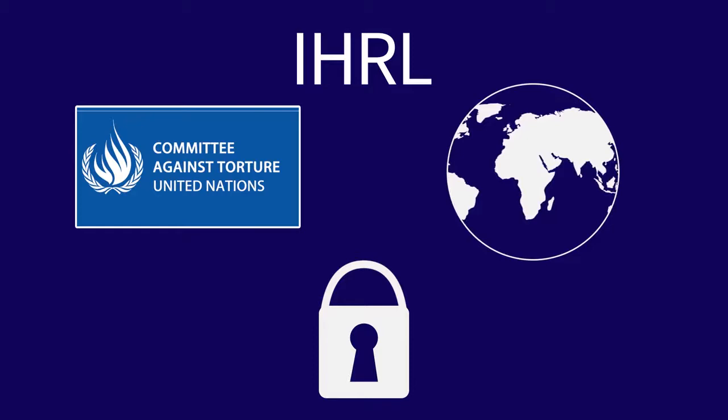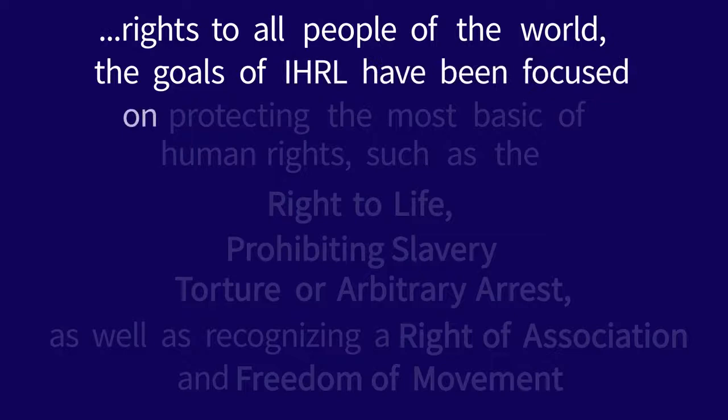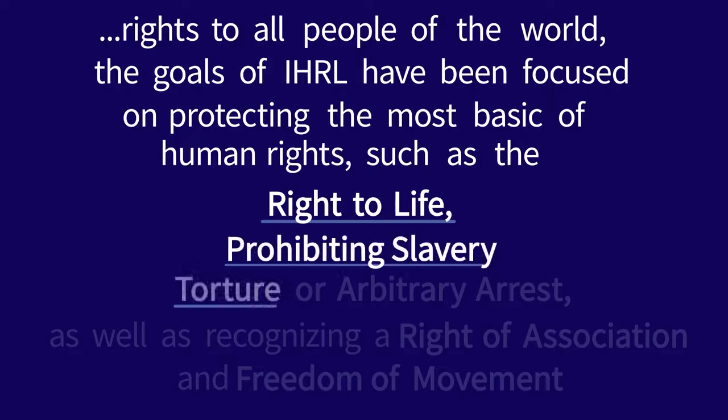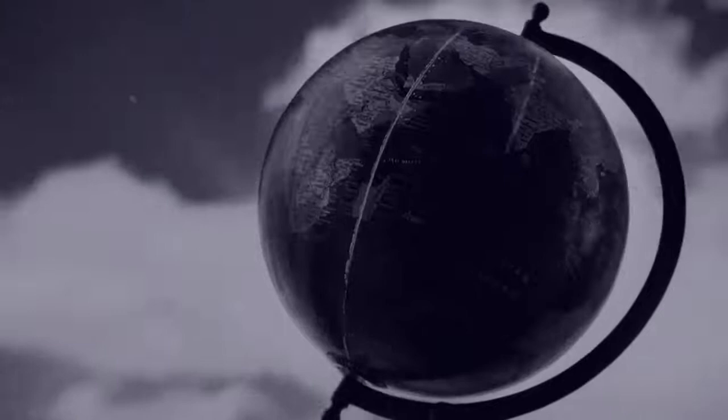Despite these efforts, so far there is no single binding international agreement on human rights that applies worldwide. Because international human rights law seeks to broaden recognition of certain rights to all people of the world, the goals of IHRL have been focused on protecting the most basic of human rights, such as the right to life, prohibiting slavery, torture, or arbitrary arrests, as well as recognizing a right of association and freedom of movement. In doing so, IHRL has remained broadly focused and, apart from a few treaties that focus on a specific right, lacks the detail and specificity found in IHL.